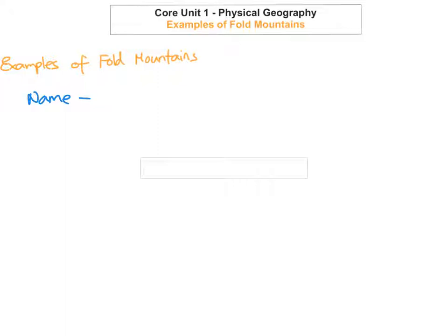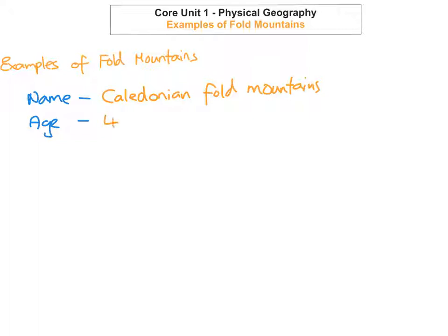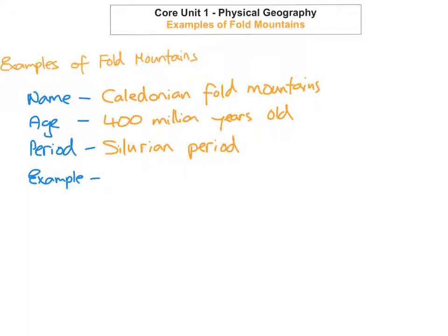The first fold mountains we're going to look at is the Caledonian fold mountains, found in Ireland. The age of these Caledonian fold mountains — they're about 400 million years old. The geological period of the Caledonian fold mountains was the Silurian period. An example is the Donegal mountains, which are examples of the Caledonian fold mountains.